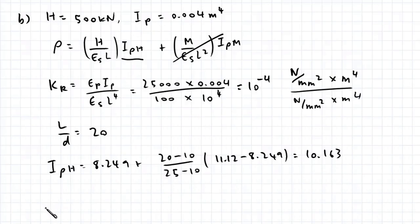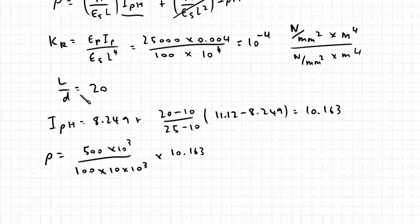Therefore, our displacement is equal to 500 times 10 to the power of 3 divided by 100 times 10 times 10 to the power of 3—I'm converting everything to newtons and millimeters—times IPH, which has no dimension, 10.163. Therefore, our displacement is 5.1 millimeters.